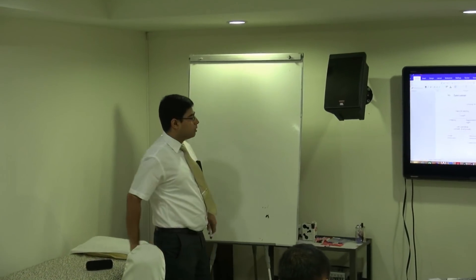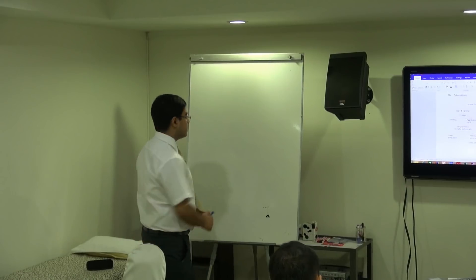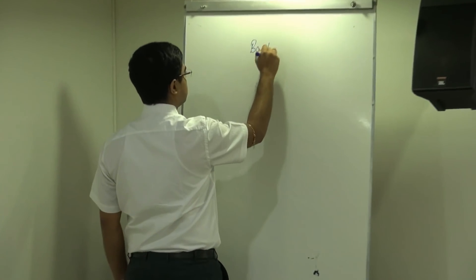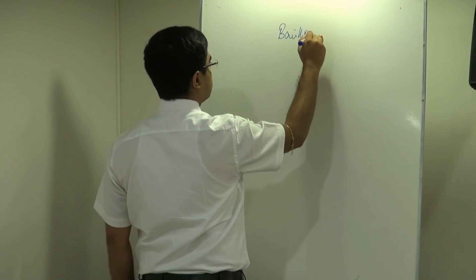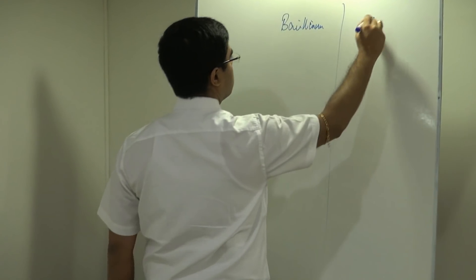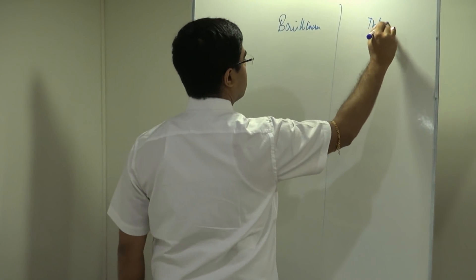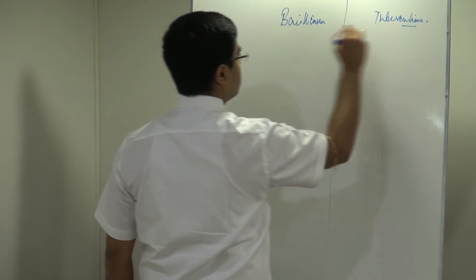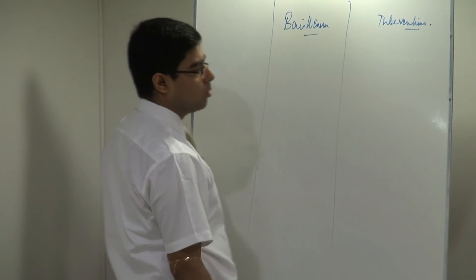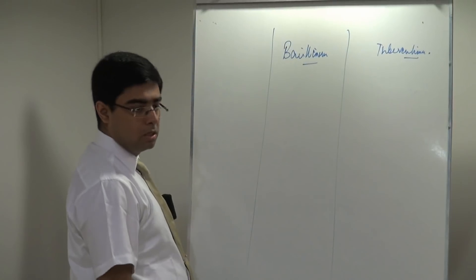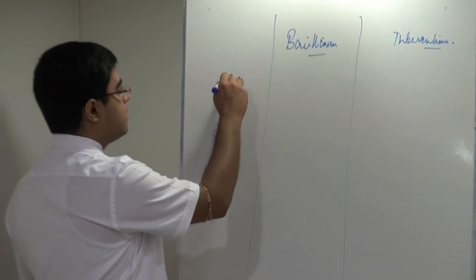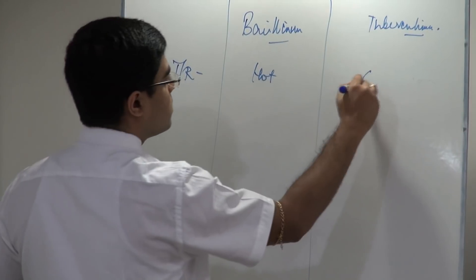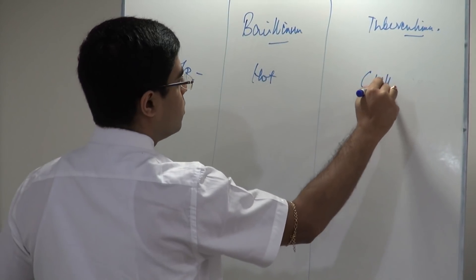When you come to Tuberculinum, if you understand the difference between Bacillinum and Tuberculinum, that will be easier. The first and foremost point: Bacillinum is hot, Tuberculinum is chilly.